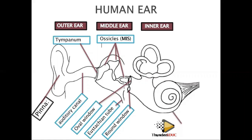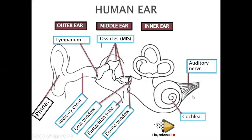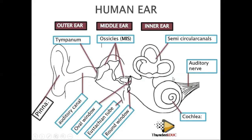The inner ear is divided into different parts: the cochlea and the auditory nerve. The cochlea is where you find the cells detecting sound or vibration. The auditory nerve sends impulses to the brain. There is also the semicircular canals, which are responsible for balance.